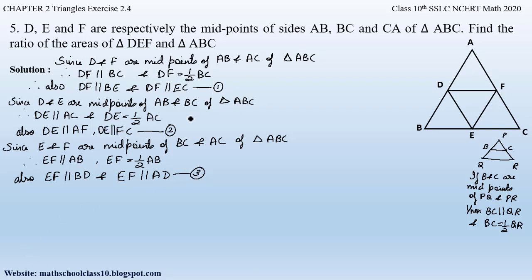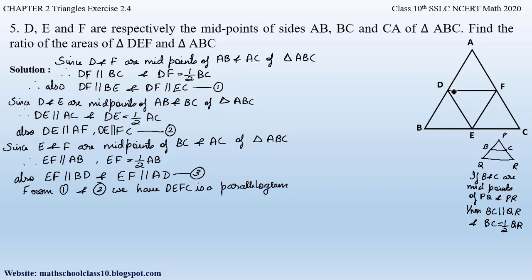From equations one and two, DF is parallel to EC and DE is parallel to FC. Since opposite sides are parallel, DECF is a parallelogram. The opposite angles of this parallelogram are equal. So from equation one and two, DECF is a parallelogram. Naming the relevant angles as angle 1 and angle 2, we get angle 1 equals angle 2, since opposite angles of parallelogram DECF are equal.